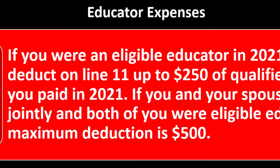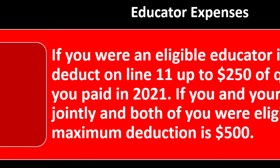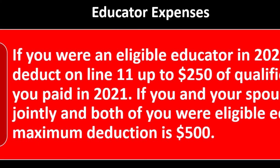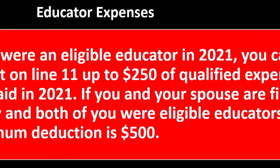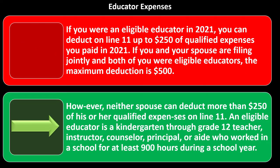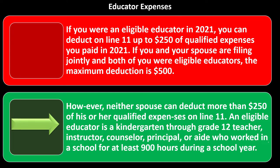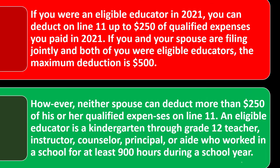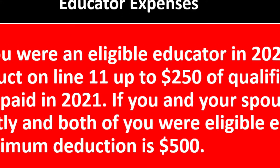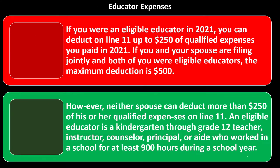If you were an eligible educator in 2021, you can deduct on line 11 up to $250 of qualified expenses paid in 2021. If filing jointly and both spouses are eligible educators, the maximum deduction is $500, but neither spouse can deduct more than $250 of his or her own qualified expenses. An eligible educator is a kindergarten through grade 12 teacher, instructor, counselor, principal, or aide who worked in a school for at least 900 hours during the year.